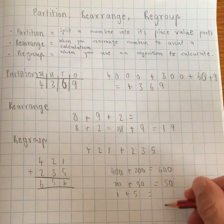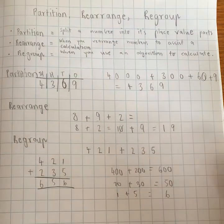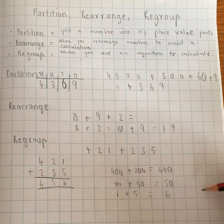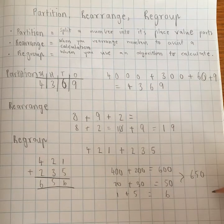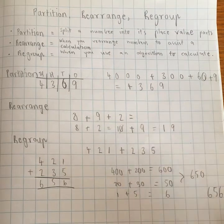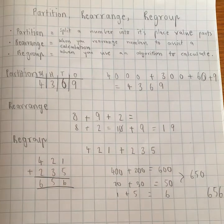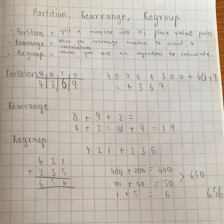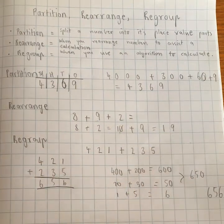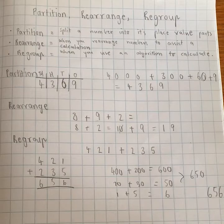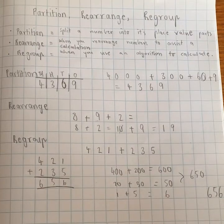Now you might be starting to recognize this strategy. It's called the split strategy. All right, and then I add them at the end. And 600 plus the 50 is 650 plus the other 6, 656. So regrouping is about focusing on the place value of the numbers, like I did here, to help me solve and calculate the answer a little bit easier.